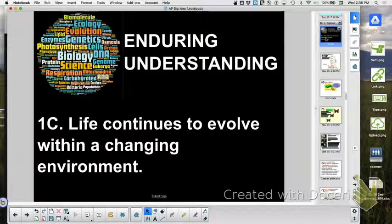1C is life continues to evolve within a changing environment. Life continues to evolve, meaning it's not static. Why is this changing environment? Do you have to have a changing environment to evolve? What would be another way to evolve? Mutations. Mutations could cause you to evolve. But a changing environment could cause you to evolve why? To adapt. Because there are some organisms that are more fit for that particular environment and are more likely to survive and reproduce.